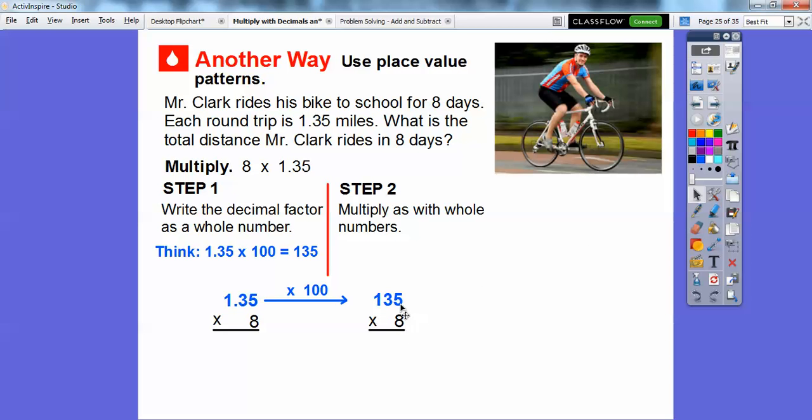So 8 times 5 is 40. Bring the 0 down for the 40 and carry the 4. And then 8 times 3 is 24, plus the 4 is 28. So we'll carry an 8 down here and the 2 right there. Finally, 8 times 1, and then we'll add that 2. Gives us 1,080.